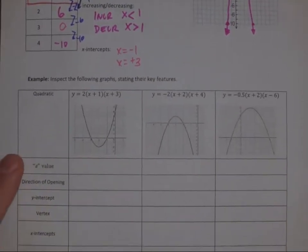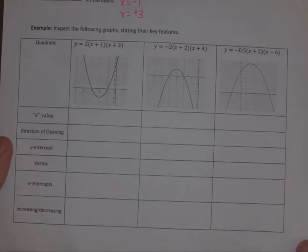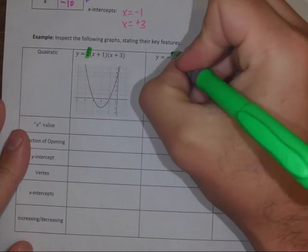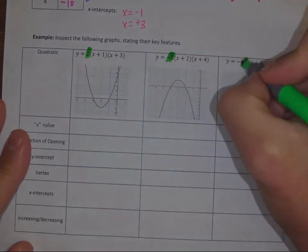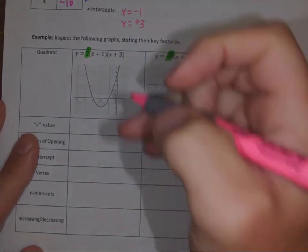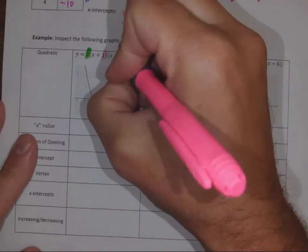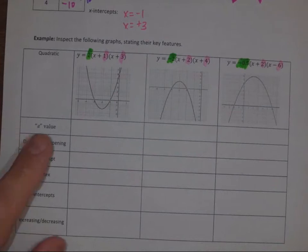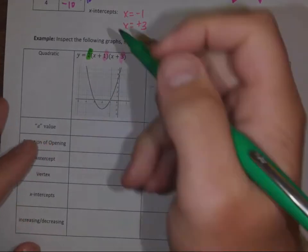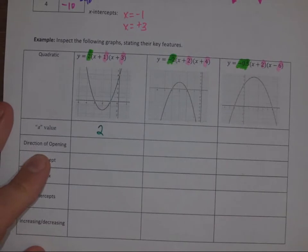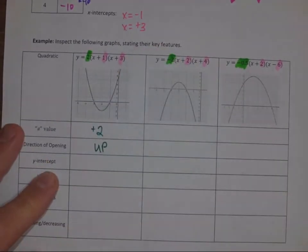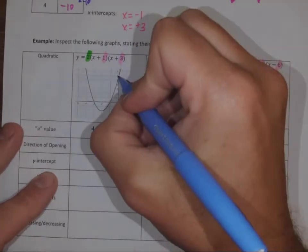Let's use some of our knowledge to move a little bit quicker. I'm going to highlight the a value and the factored form. Our a value for the first one — direction of opening — that's positive, so it opens up. The y-intercept, if we look at the graph, corresponds to six.